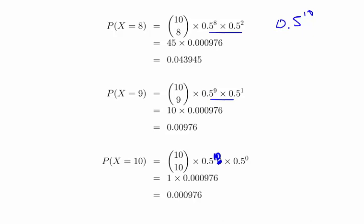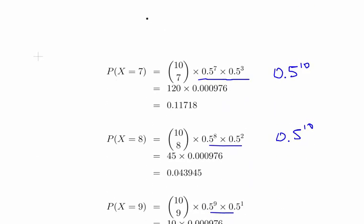And in each case that works out to be 0.000976. So what we have to do is essentially in this case is just calculate the binomial coefficients. In each case, multiply it by that number and get each probability value there. In this case it's 120 by 0.000976.